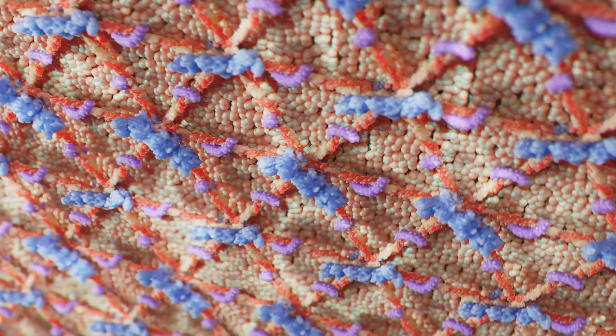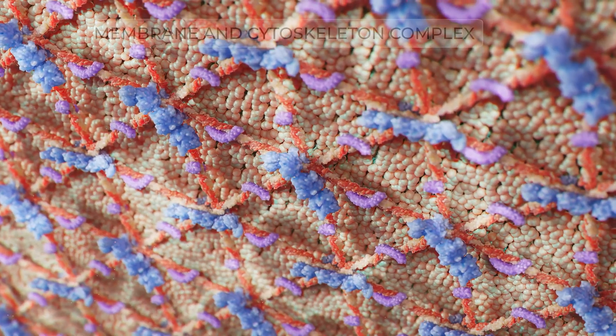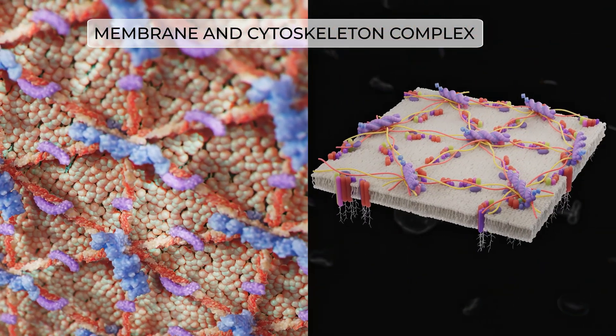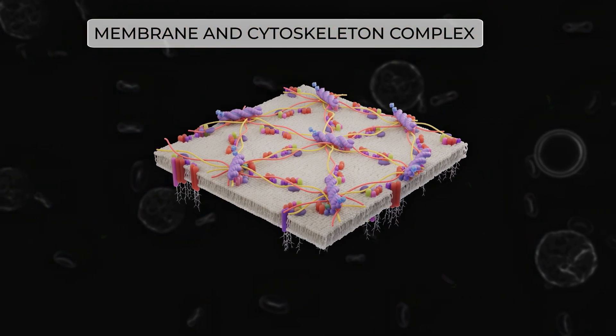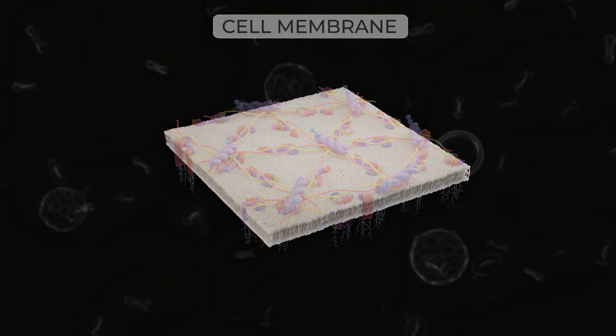The cytoskeleton and cell membrane play an important role in the functioning of erythrocytes. As in other cells, the erythrocyte membrane is composed of a phospholipid bilayer.